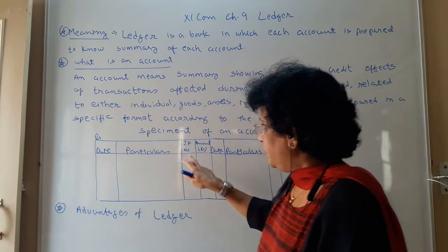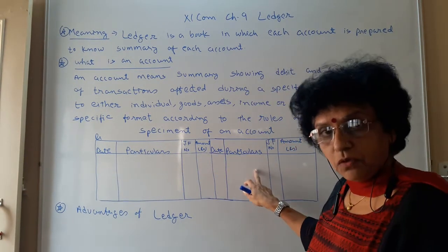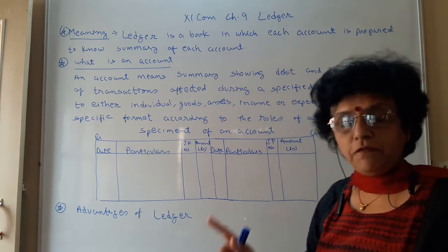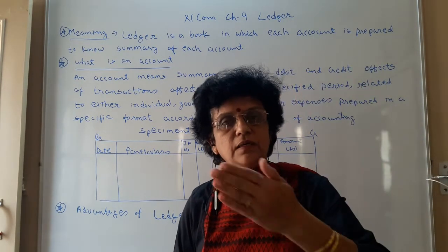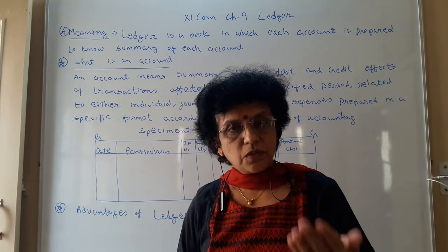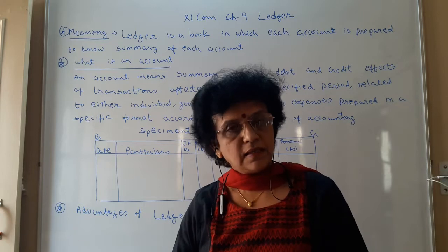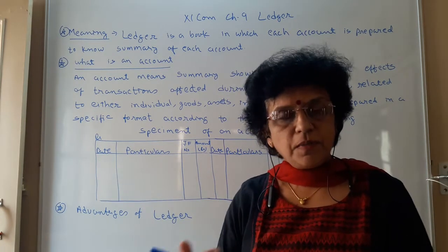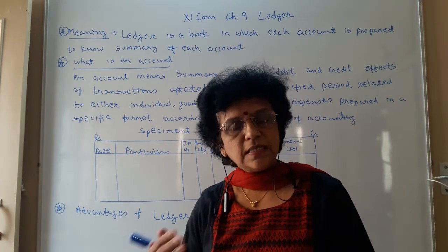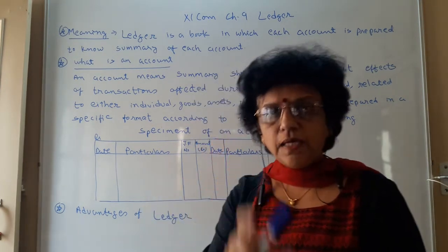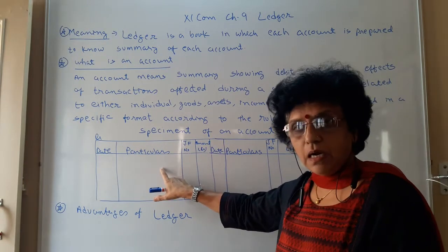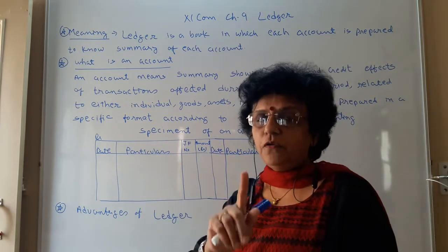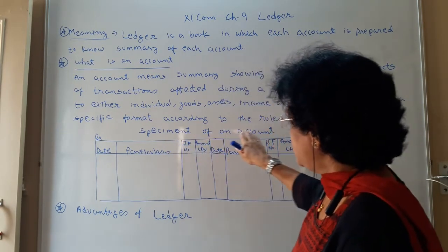What is the format? The format is the T-form presentation, which we have also observed in the cash account. According to the rules of accounting — personal account, real account, nominal account — rules are to be followed. Personal account: debit the receiver, credit the giver. Real account: debit what comes in, credit what goes out. Nominal account: debit all expenses and losses, credit all income and gain. Every time when you post in a particular account, always keep on remembering that rule and follow the posting accordingly.